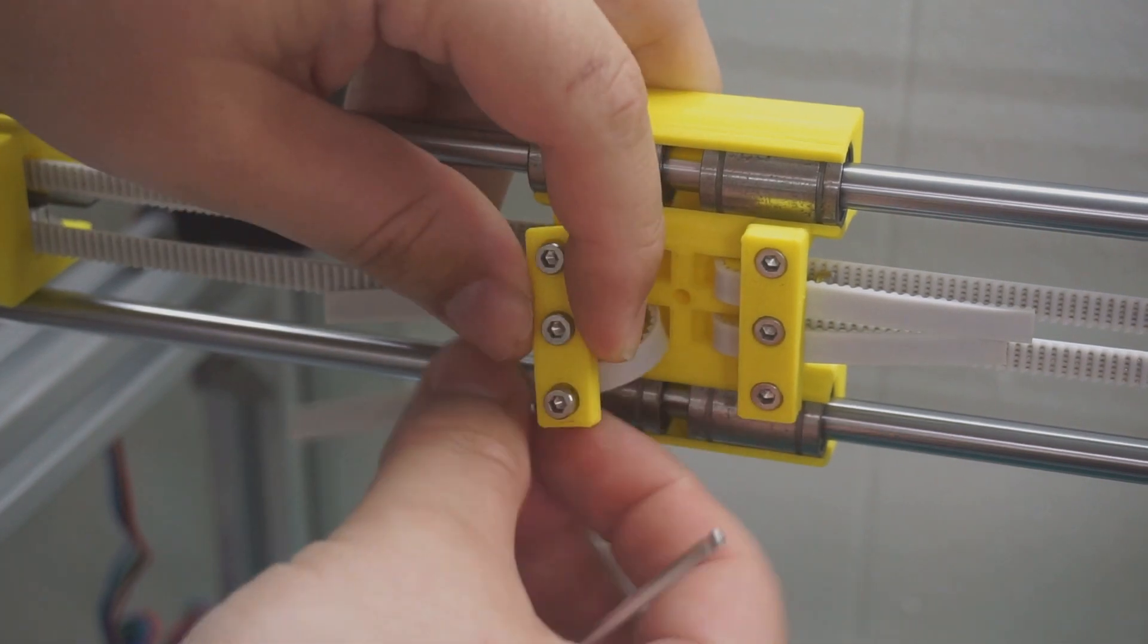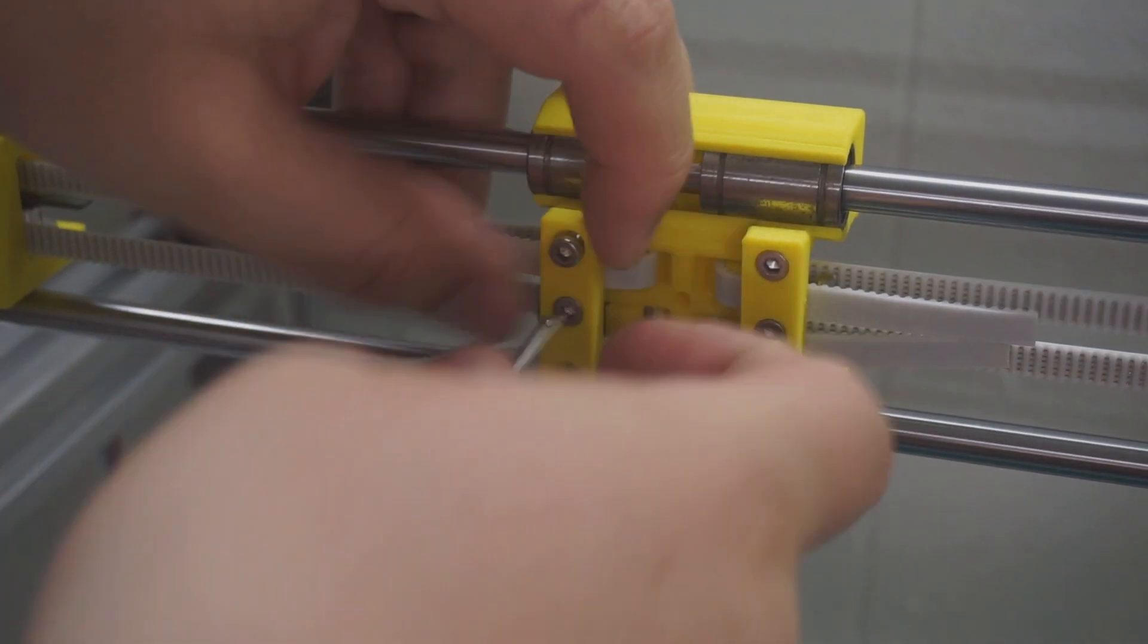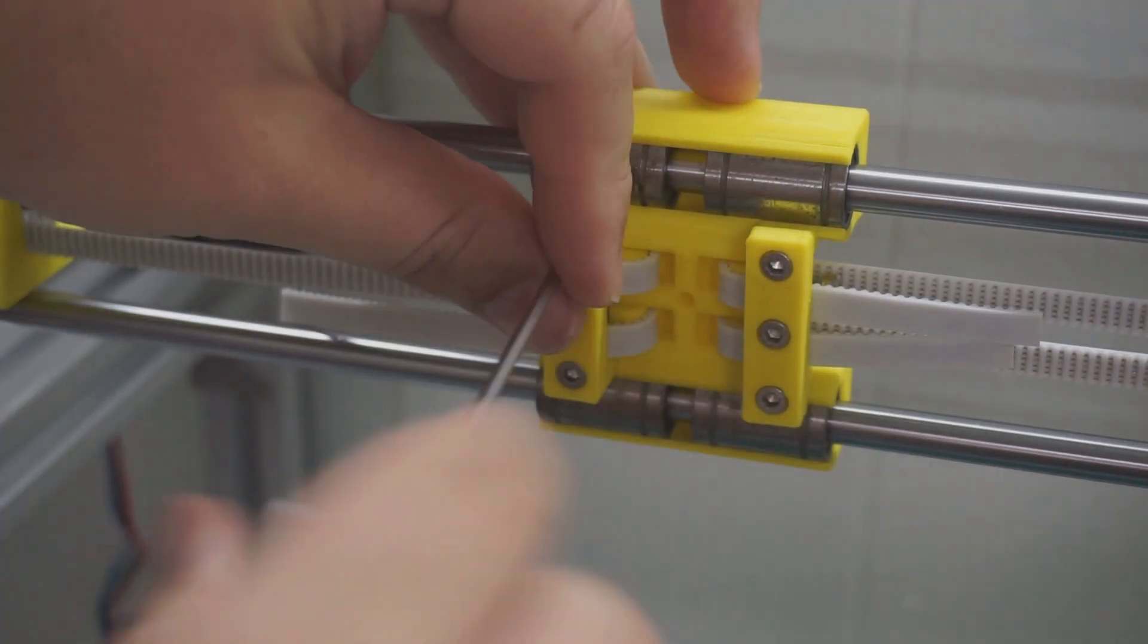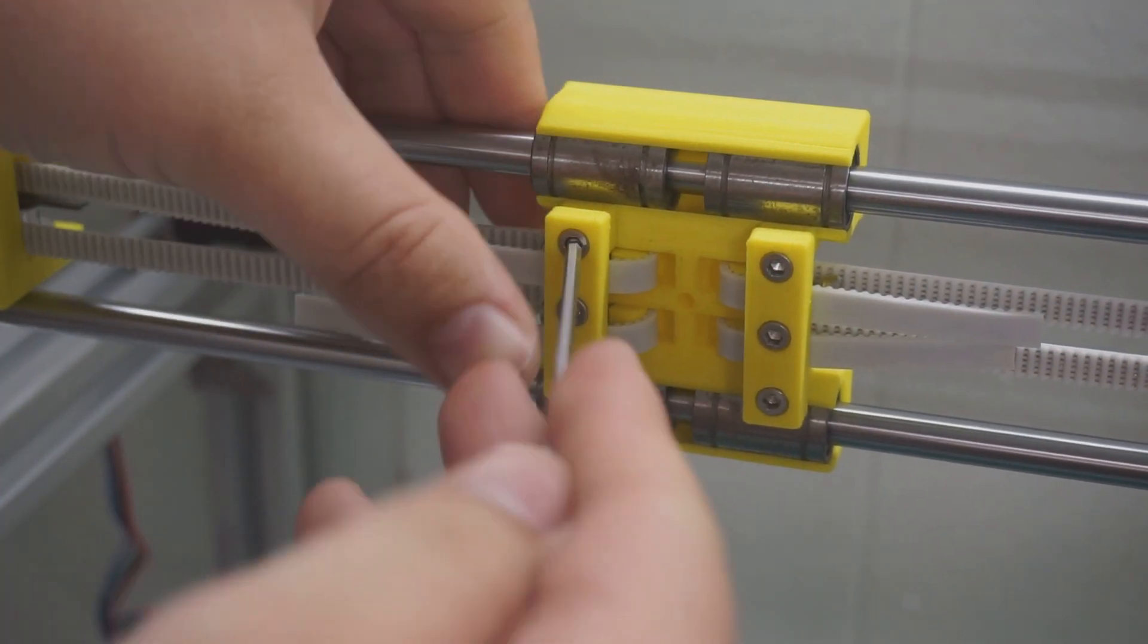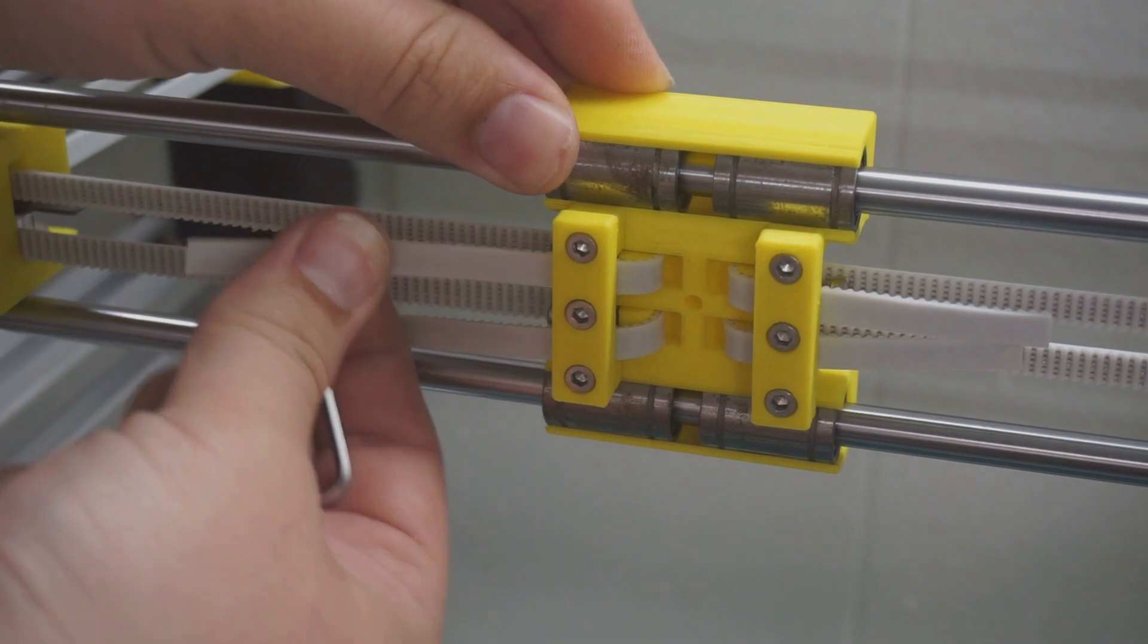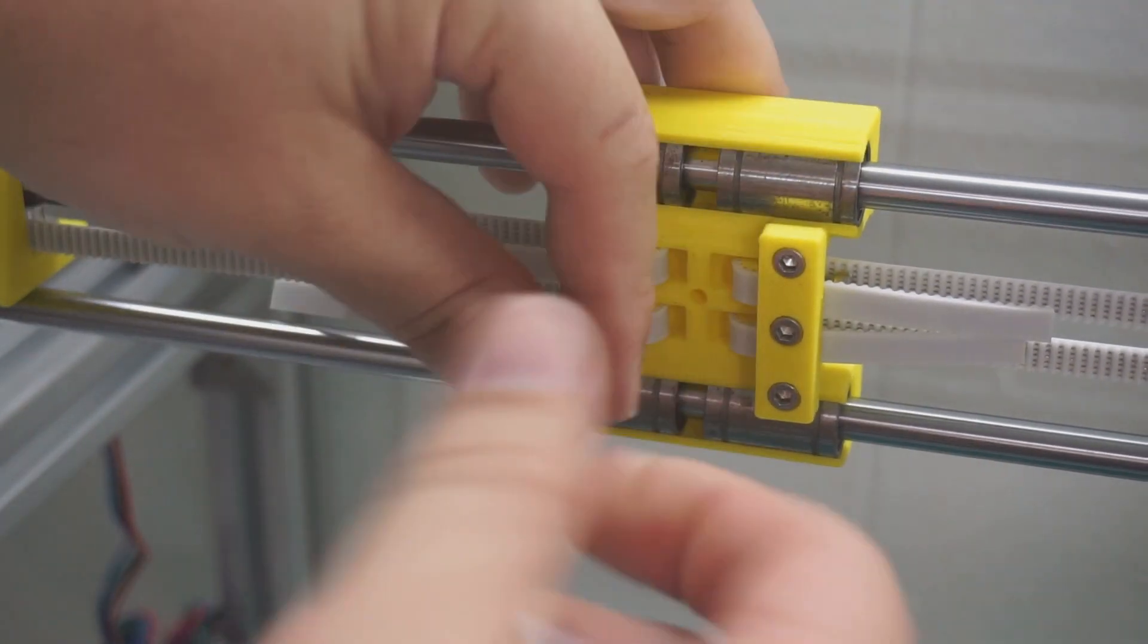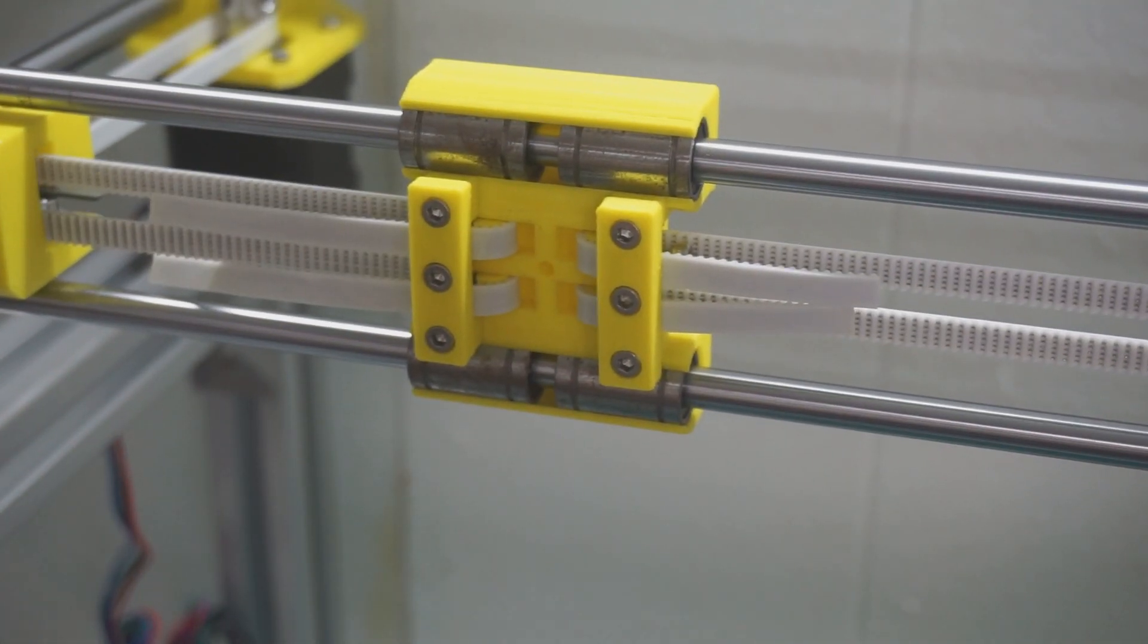Then we fit the clamp down on the other side. Again starting with the middle screw. Then we want to make sure all six screws are nice and tight.